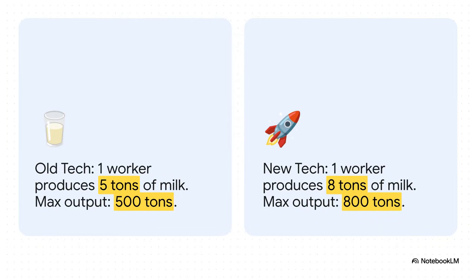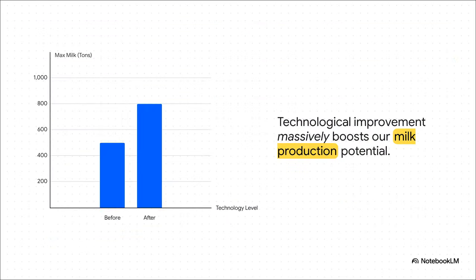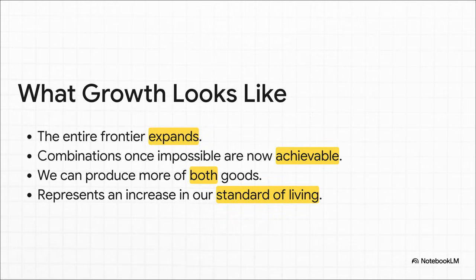Let's imagine a huge breakthrough. Someone invents a new milking machine, and all of a sudden a single worker can produce 8 tons of milk a day instead of just 5. This is a classic technological improvement — a huge boost in productivity. If we put all 100 workers on milk production now, we don't get 500 tons anymore; we get a massive 800 tons. Our maximum wheat production hasn't changed, but our potential for milk has just exploded. This is what economic growth actually looks like: the entire Production Possibility Frontier pushes outward. Those combinations that were once impossible dreams are now totally within our reach. We can have more milk without even giving up any wheat. This is how societies get richer and how standards of living improve.